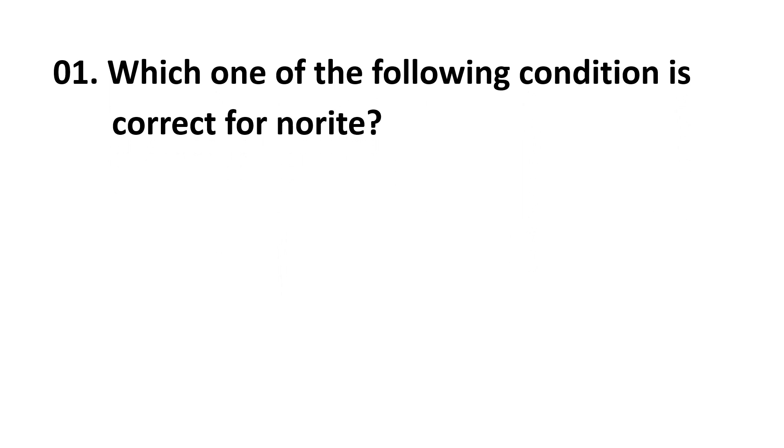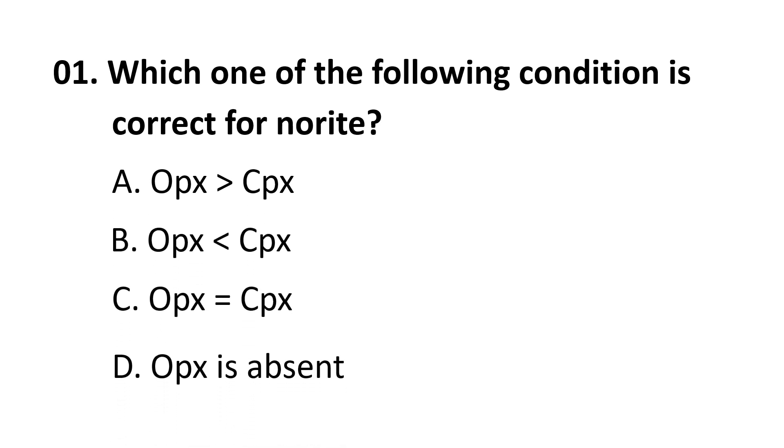First question: which one of the following condition is correct for norite? Choices are Opx is greater than Cpx, Opx is less than Cpx, Opx is equal to Cpx, Opx is absent. The correct answer is Opx is greater than Cpx, that means orthopyroxene is greater than clinopyroxene in the case of norite.